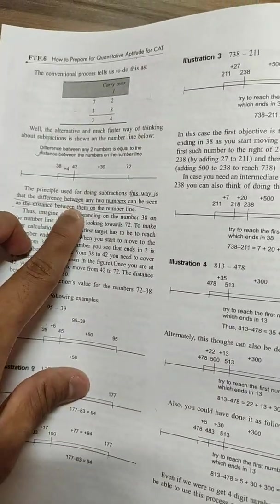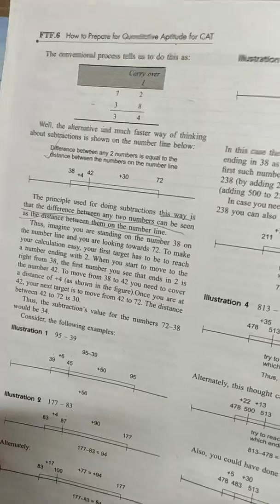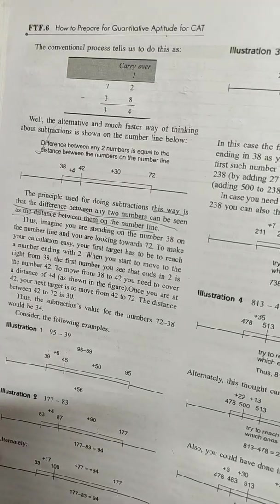Subtraction also—he is telling by using a number line how we can tell, for example, the difference between any two numbers can be seen as a distance between them on the number line. Multiplication, chapter two.